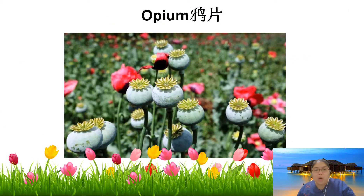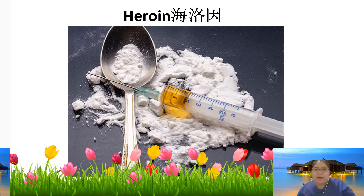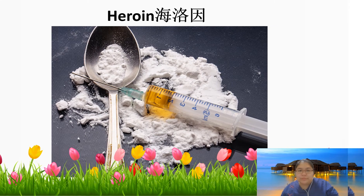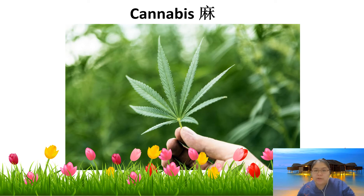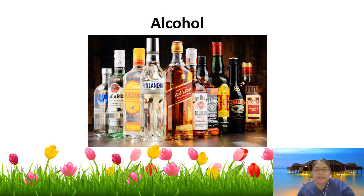Here are the depressant examples one by one. Opium comes from a plant with flowers. Morphine is derived from opium and is used by injection to prevent pain. Heroin is also injected. Cannabis is another plant-based depressant. Barbiturates are found in medicines. Alcohol is also classified under depressants.